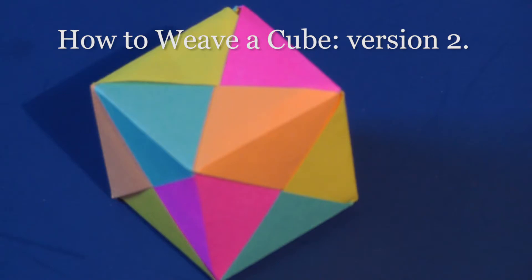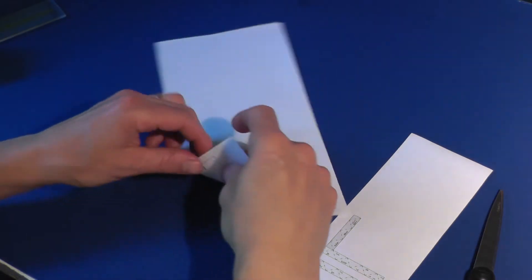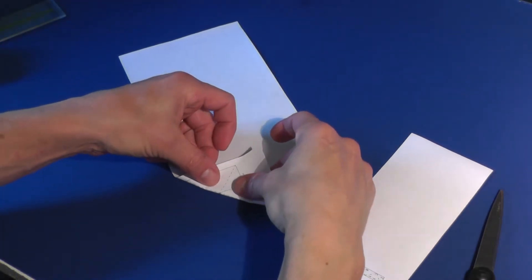Here is how to weave a cube using four braided strips of paper. Download and print the pattern from CutOutFoldUp.com.